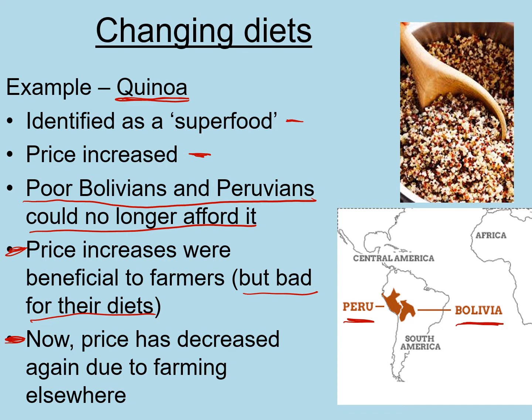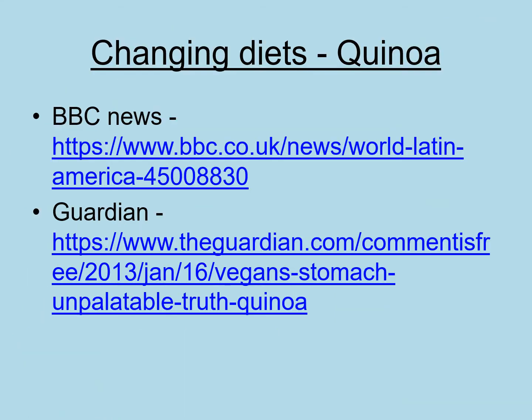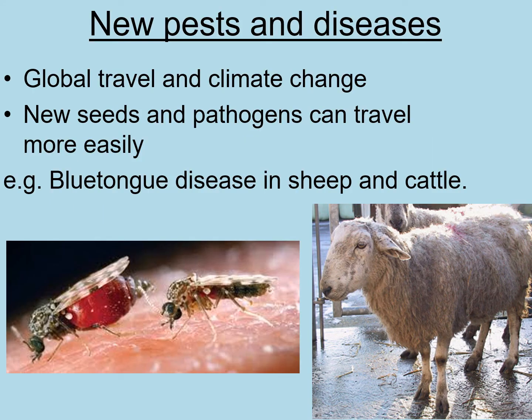More recently the price has decreased again because quinoa is now grown elsewhere — in North America and other areas — so we're not completely reliant on Peru and Bolivia. But when this so-called superfood first became popular, it had a really bad impact on Bolivians and Peruvians. We need to make sure our changing diets don't negatively affect people in other countries. There are links to BBC News and Guardian articles if you'd like to read more.